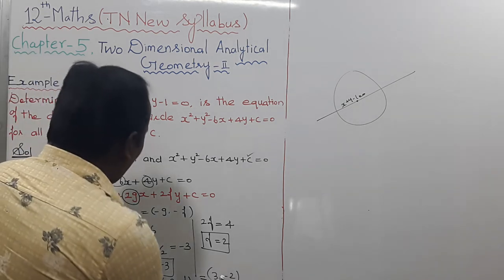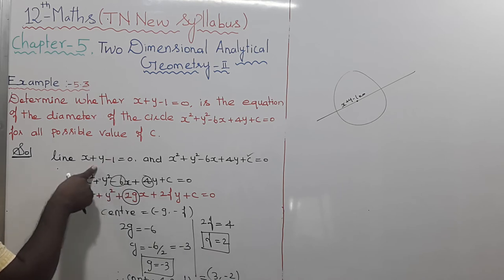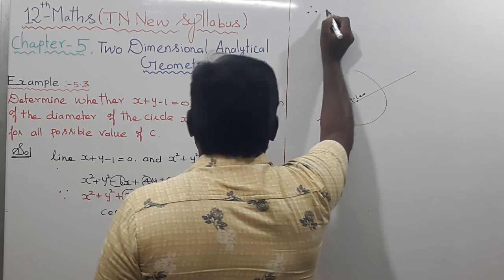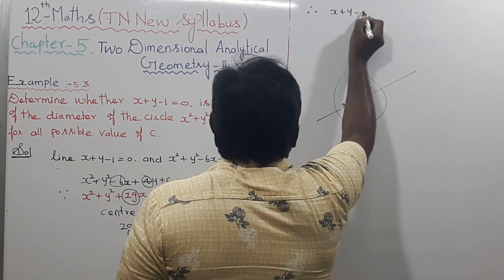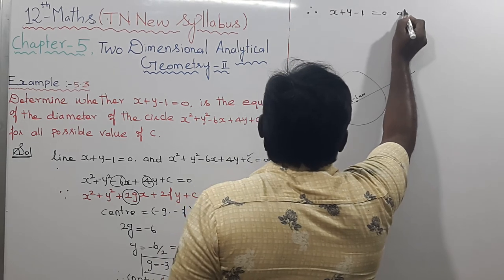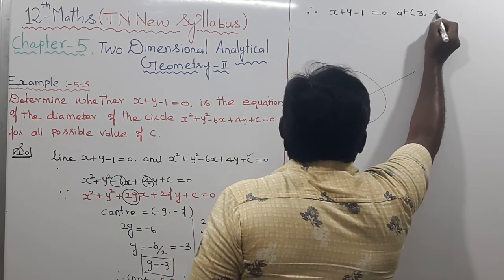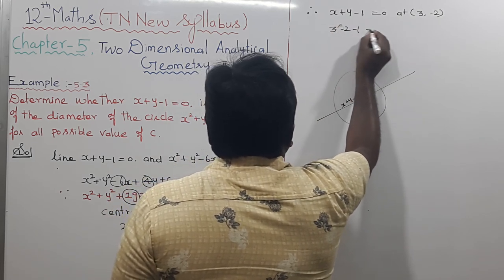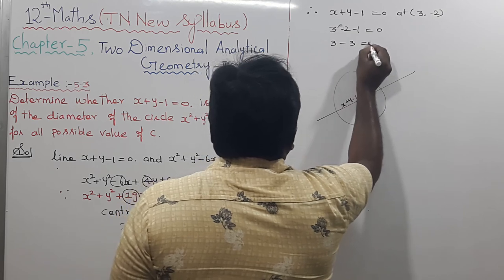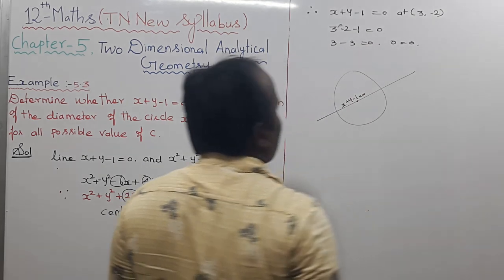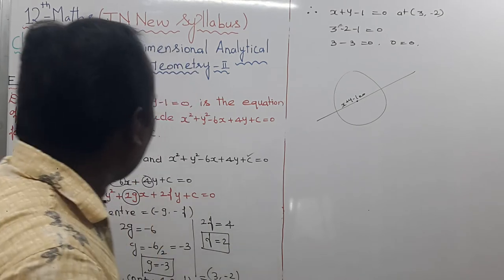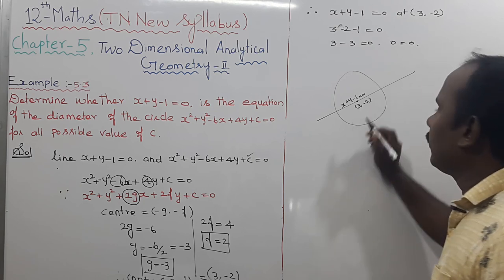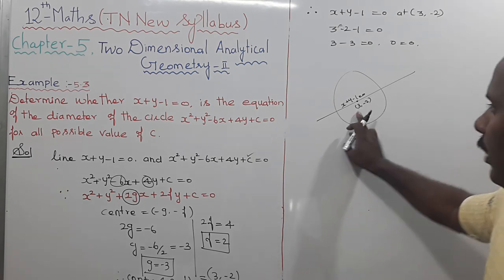Now, with the center found, we substitute the center point 3 comma minus 2 into the given line equation x plus y minus 1 equals 0. Substituting: 3 plus (minus 2) minus 1 equals 0, which gives 0 equals 0. So the diameter is indeed passing through the point 3 comma minus 2.